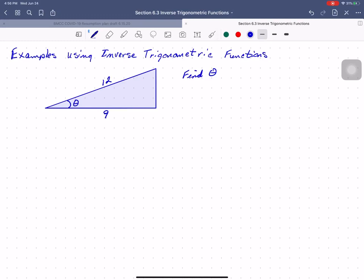So what do I know? We could do a little work here, but what I know is that I can remember SOHCAHTOA, and what I have is the side adjacent to the angle and the hypotenuse, so I know that the cosine of my angle theta is equal to nine twelfths, and we can reduce that to three-fourths.